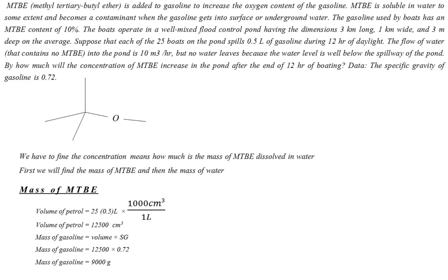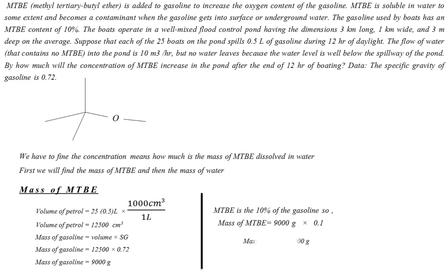We also know the composition of MTBE in the gasoline fraction. We are told that MTBE is 10% of the gasoline, which as a fraction is 0.1. Multiplying the mass fraction of MTBE by the total gasoline mass: mass of MTBE = 0.1 × 9,000 = 900 grams. This is the mass of the solute that we will use in calculating the concentration.